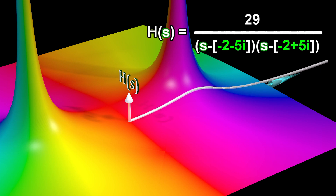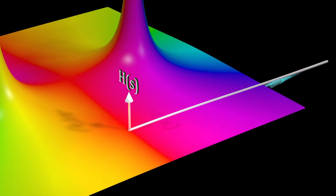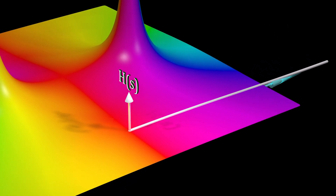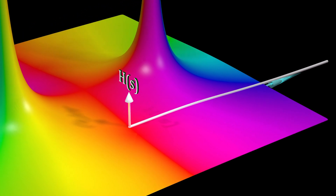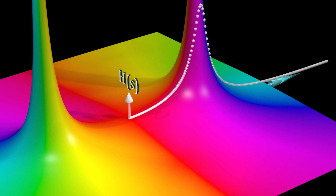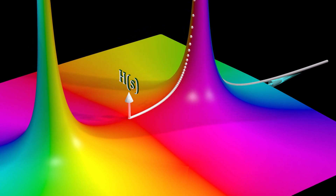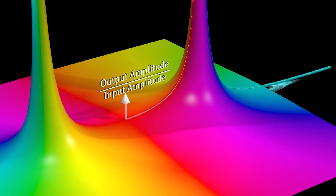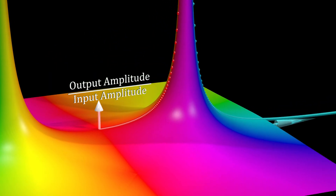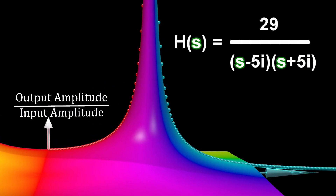By changing the transfer function of a system, we can change its frequency response. For some transfer functions, the output amplitude at the resonant frequency can grow to infinity. This is why for some systems, applying the resonant frequency can destroy the system.